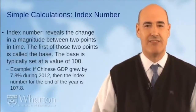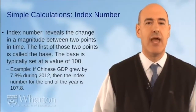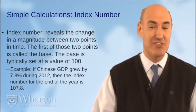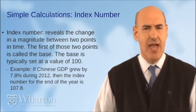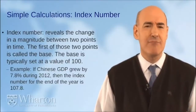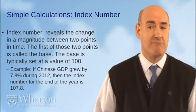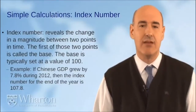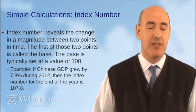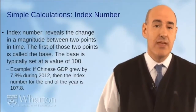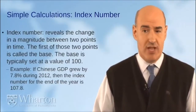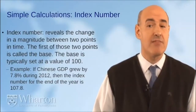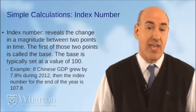An index number essentially reveals the change in a magnitude between two points in time, with the base set to 100. For example, if Chinese GDP grew by 7.8% during 2012, the index number for the end of that year would be 107.8. I already introduced this when I told you that books on globalization is one of the fastest-growing indicators — I was talking about index numbers.